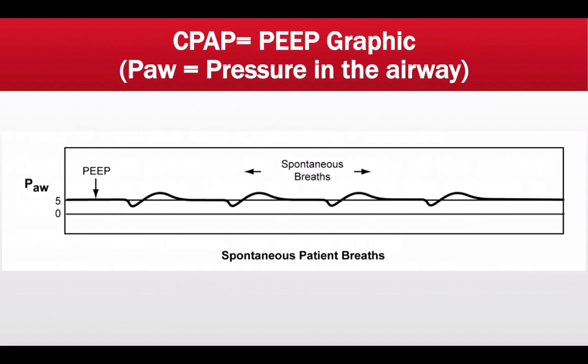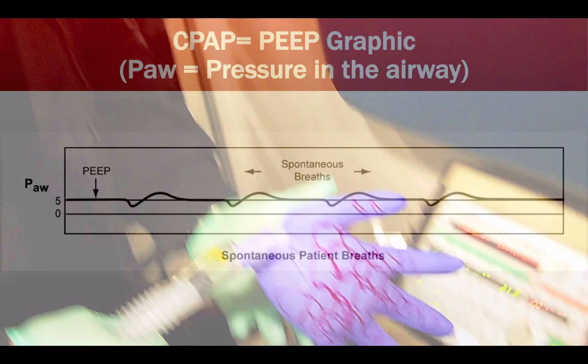Here is a graphic representation of CPAP and PEEP from the LTV 1200 manual. PAW stands for pressure in the airway. The clinician has set CPAP or PEEP at 5 centimeters of H2O. The dips in the waveform indicate the patient's spontaneous breaths — the patient initiates a negative inspiratory force and you see that dip. This CPAP or PEEP mode facilitates spontaneous breathing while maintaining circuit pressure at 5 centimeters of water throughout the entire respiratory cycle.